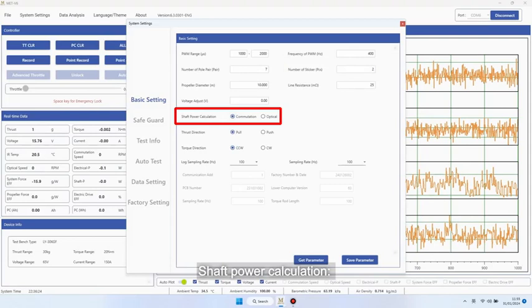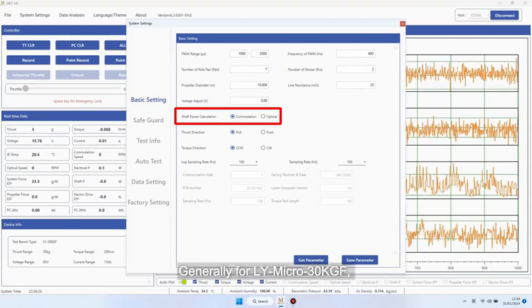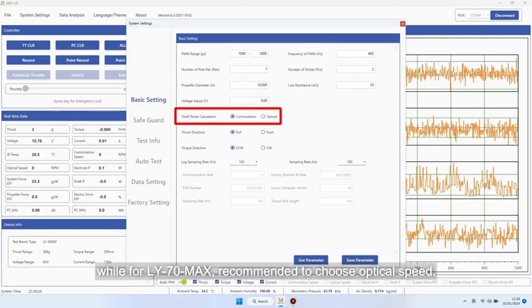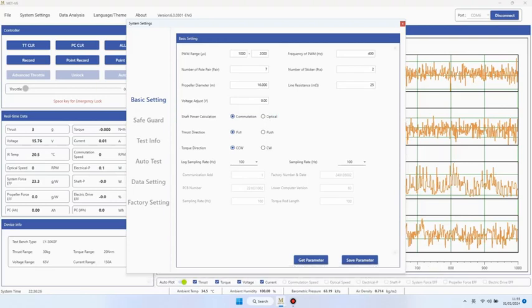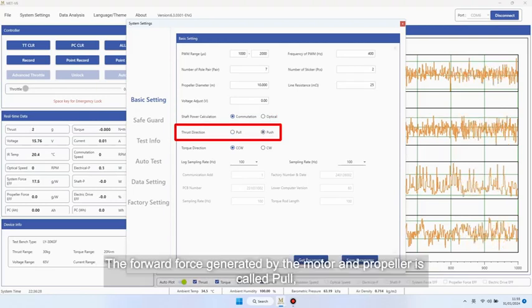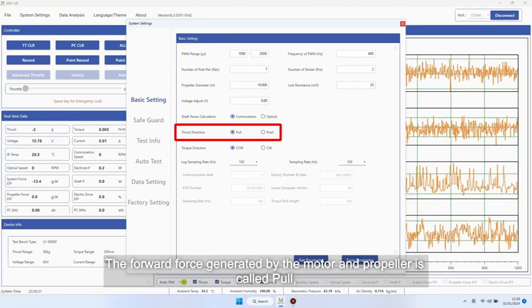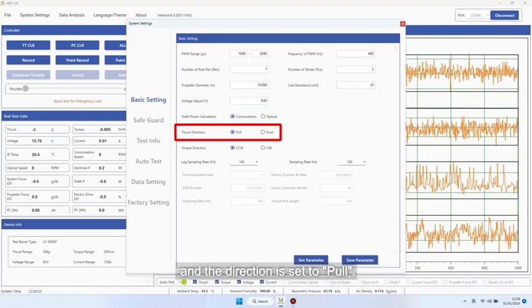Shaft power calculation. Generally for ALY micro 30 kgf, it is recommended to choose commutation speed, while for ALY 70 max, recommended to choose optical speed. Thrust direction: the forward force generated by the motor and propeller is called pull, and the direction is set to pull.